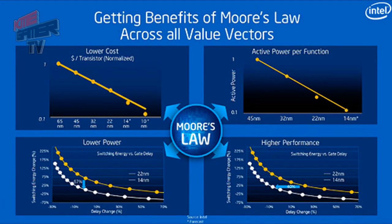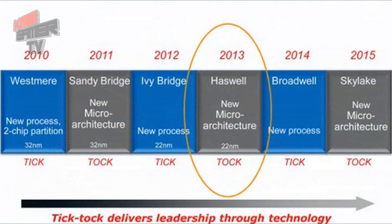Moore's Law is the observation that over the history of computing hardware, the number of transistors in a dense integrated circuit doubles approximately every two years. It may not be as solid a law as physics, but its consistency seems to stand. Another model adopted by Intel since late 2007 is known as Tick-Tock.